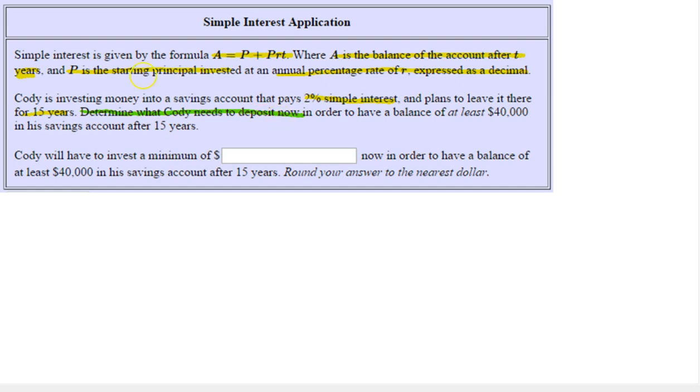In order to have a balance of, I'm going to switch back to yellow because it says, at least $40,000 in his savings account after 15 years. So I changed this to yellow because this is given information about the future balance of the account. So this is actually given, and they hadn't given it to us before. So let's write this equation and formula right down here.